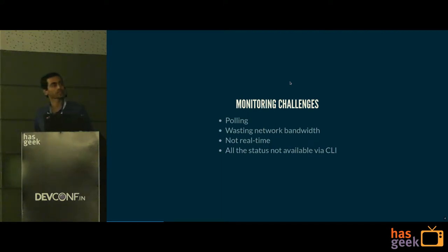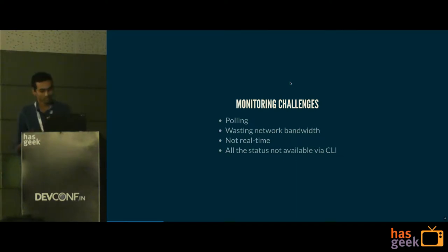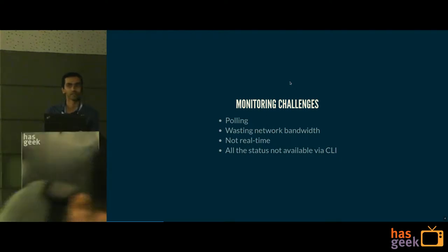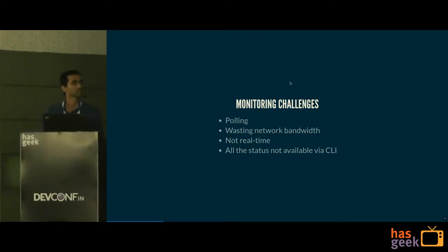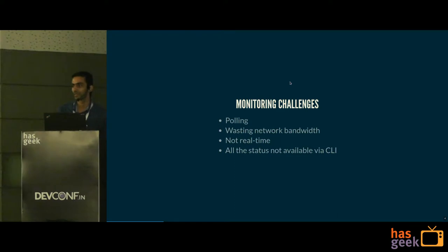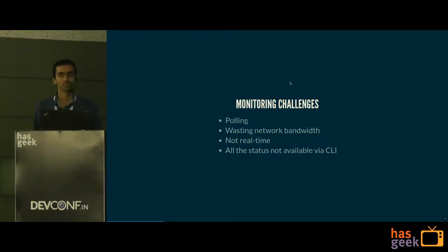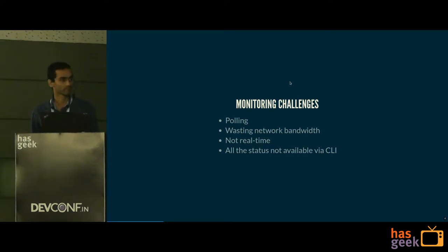When it is a distributed file system and we try to monitor things, it is very difficult because of multiple nodes and it's not real-time. Typically we end up polling the system — querying the status frequently. This wastes a lot of network bandwidth and still isn't real-time even at 10-second or 5-second intervals. Some statuses are available through CLI but not all. For example, if something goes faulty or a node went down, we don't know what time it happened.